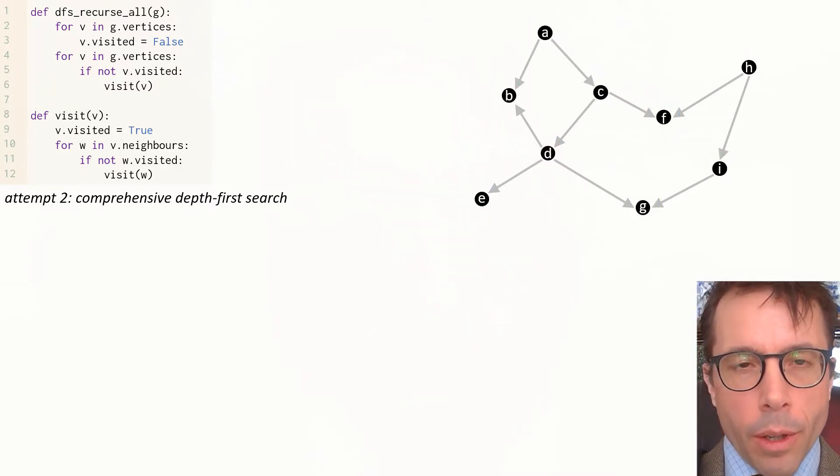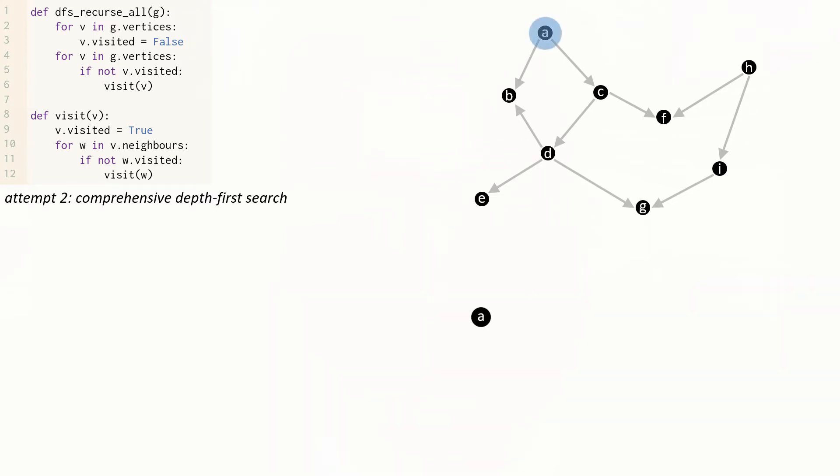Okay, but how does it do at producing a total order? Let's run through it once again, and this time we'll keep track of the order in which we visit vertices. We start at A and put it into our list, then we visit B and I'll draw the A-B edge, and then visit C and then F and then D.